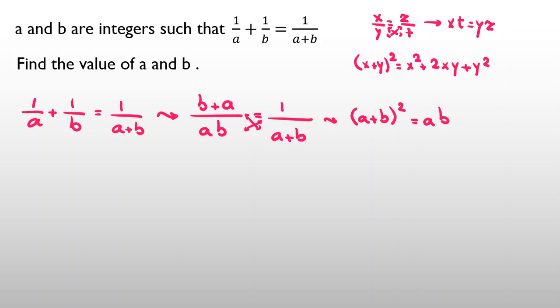Now, we want to use this and if we expand left-hand side it will be a² + 2ab + b² equal to ab.